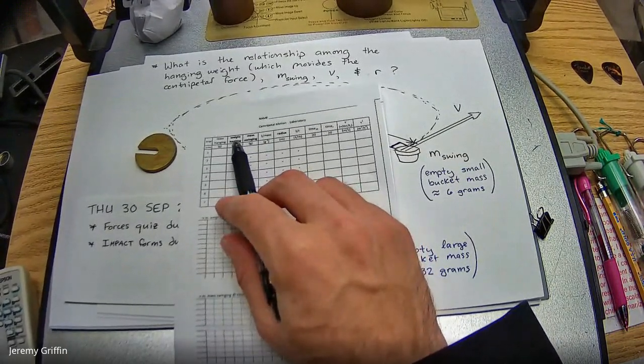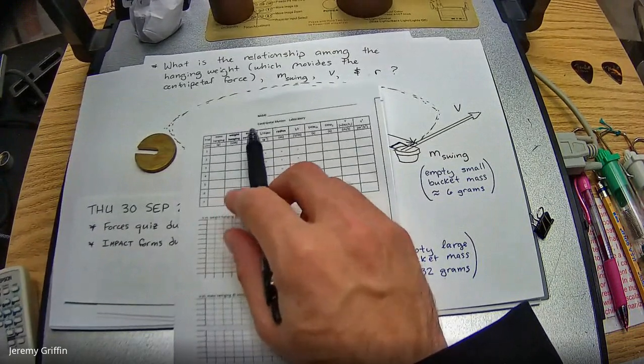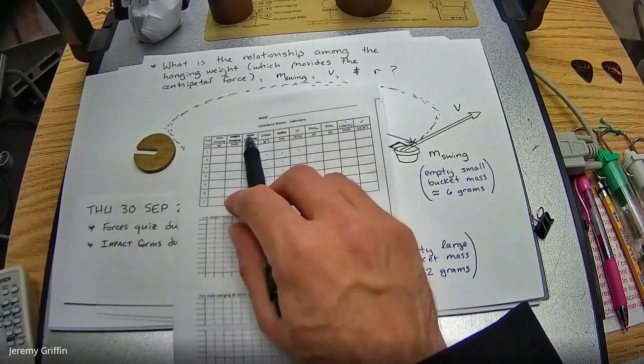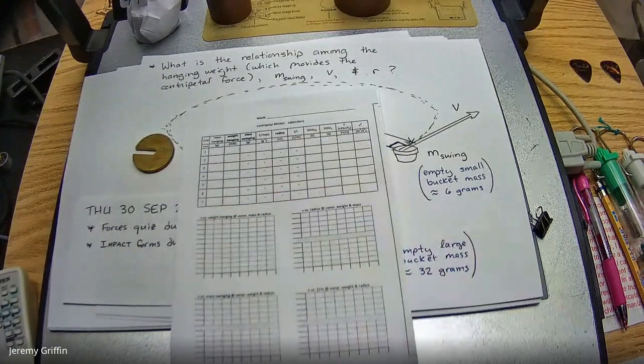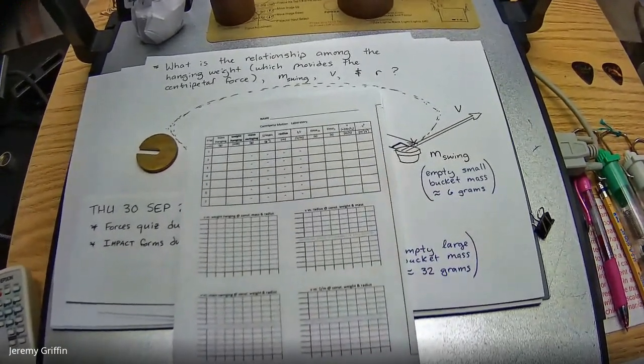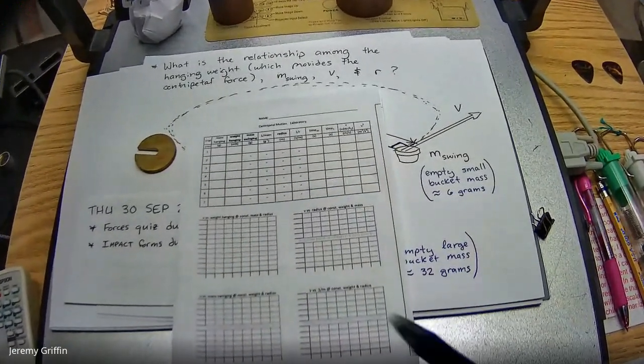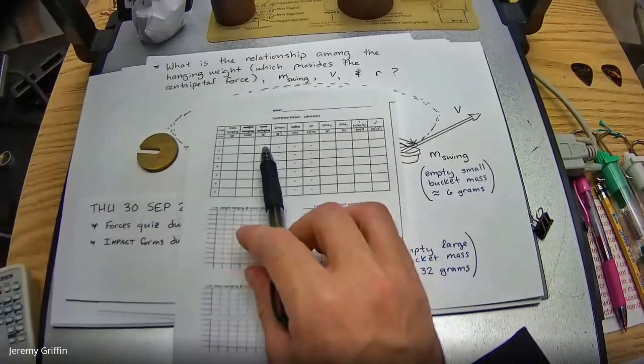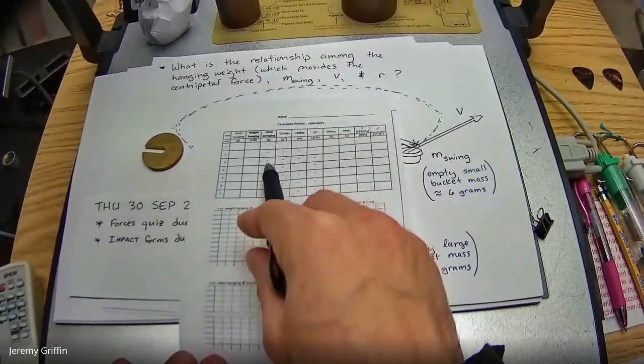Record the mass of the swinging bucket canister. Notice that weight hanging could be bold. The three bold ones are the three potential independent variables. But this particular paper, notice that there's a bunch of hash marks underneath the swinging mass.